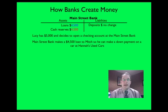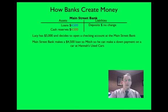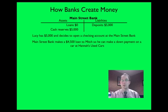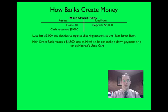Now that we've seen what the T-account looks like, let's talk about how banks create money. Here's an example. Lucy has five thousand dollars and she decides to open a checking account at the Main Street Bank. Cash reserves: five thousand. Liabilities: five thousand. Why? Because she deposited five thousand dollars — the bank now has assets of five thousand dollars in cash that are loanable.